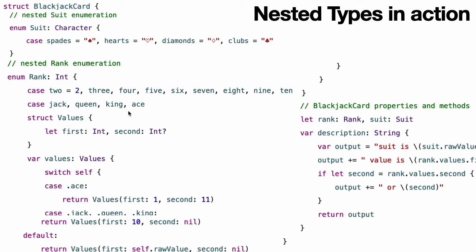As mentioned above, the Rank enumeration defines a further nested structure of its own called Values. This structure encapsulates the fact that most cards have one value, but the Ace card has two values. The Values structure defines two properties to represent this.